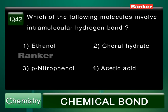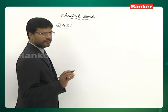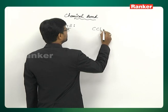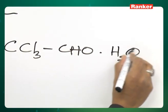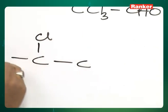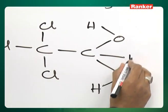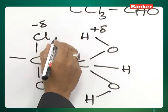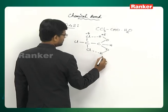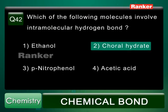Question number 42: Which molecule involves intramolecular hydrogen bond? The correct answer is chloral hydrate. Chloral hydrate has an intramolecular hydrogen bond in its structure, involving a partially positive H and partially negative O within the same molecule. Answer is the second option.